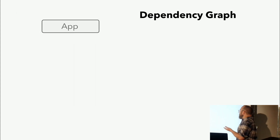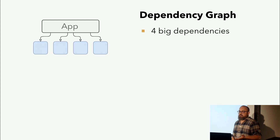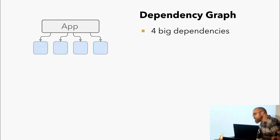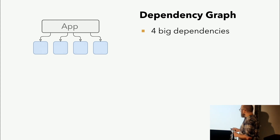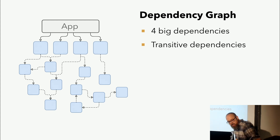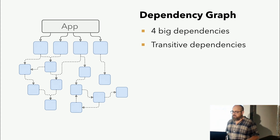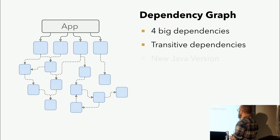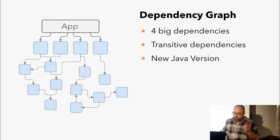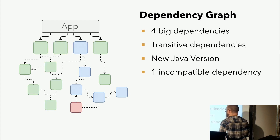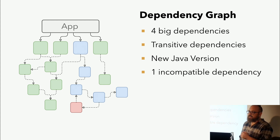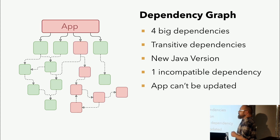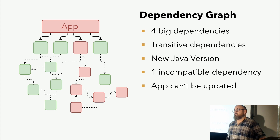Im Endeffekt sieht das dann so aus: Wir haben unsere Java-Anwendung und wir haben vier Abhängigkeiten. In Wirklichkeit sieht es aber eher so aus mit den transitiven Dependencies. Das ist jetzt nicht ganz so schlimm wie bei JavaScript, aber ich denke, jeder von uns hat auch schon mal die Java-Dependency-Hell gesehen. Jetzt kommt eine neue Java-Version raus mit einer neuen Bytecode-Version und wir wollen updaten. Alles kann updaten bis auf eine einzige Dependency ganz am Ende, auf die wir eigentlich gar keinen Einfluss haben, weil eine andere Dependency, die eine andere Dependency, die eine andere Dependency zieht. Es zieht sich bis vorne durch bis zur App und wir können unsere App nicht updaten, obwohl eigentlich alle anderen updaten könnten.